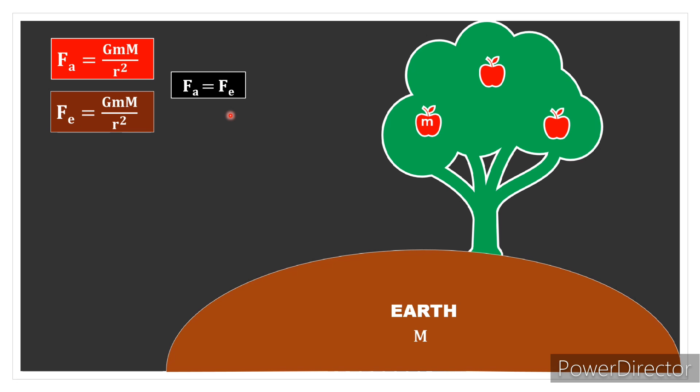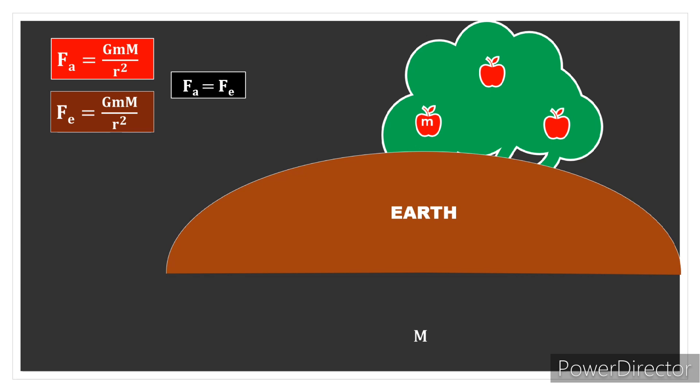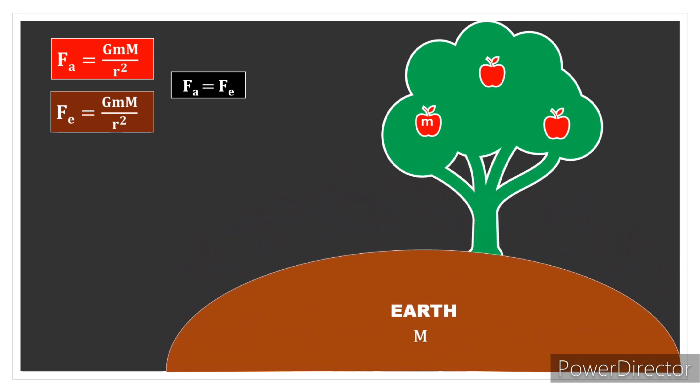This means the force Earth exerts on the apple equals the force the apple exerts on Earth - they are the same. So why does the apple fall to Earth but Earth doesn't appear to move toward the apple? The reason is related to acceleration.